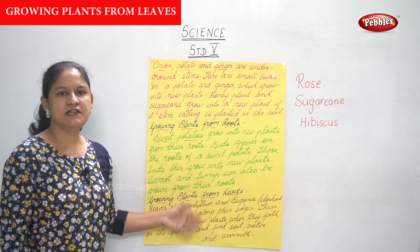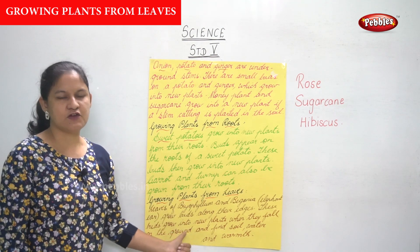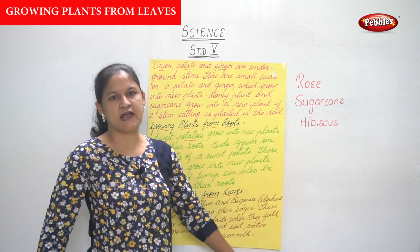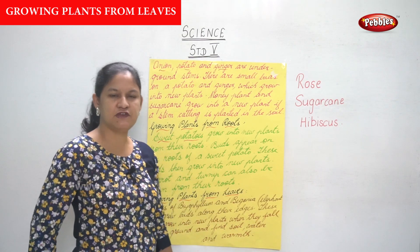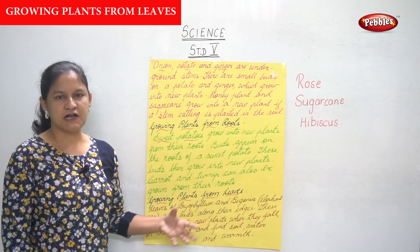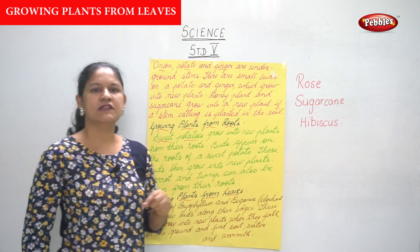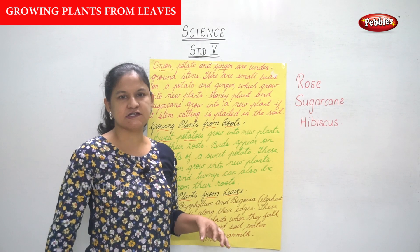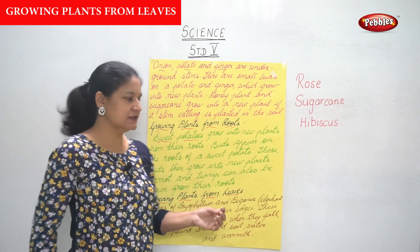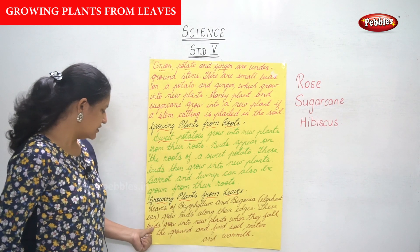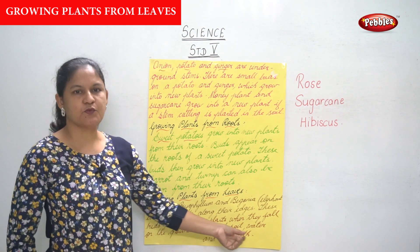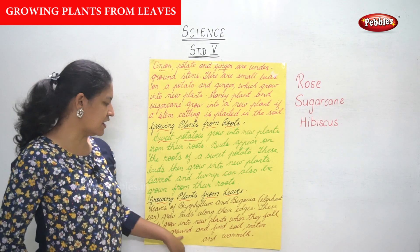Growing plants from leaves: the leaves of the bryophyllum and the begonia, also known as the elephant ear, have buds along their edges. These buds grow into new plants when they fall to the ground and find soil, water, and warmth.